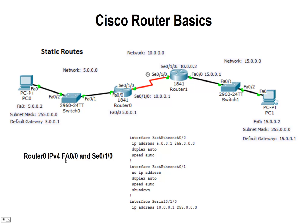We also need to set the ports FA0/0 and the serial port 0/1/0. The FA port is the one connected to our PC — that's our fast Ethernet. You can see it's set with 5.0.0.1 with a Class A subnet mask of 255.0.0.0, and then we turn it on with the no shutdown command. The serial port 0/1/0 connects to the other router, and we have an IP address of 10.0.0.1 configured on it with subnet mask 255.0.0.0. This is network 10.0.0.0, connecting the two routers, so the first IP address is set for the first router on its serial port.